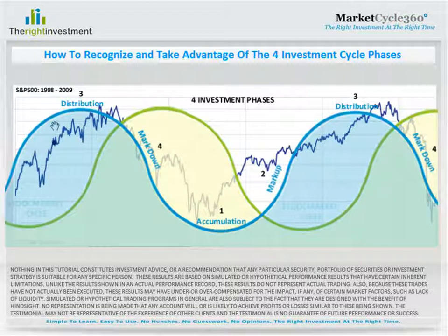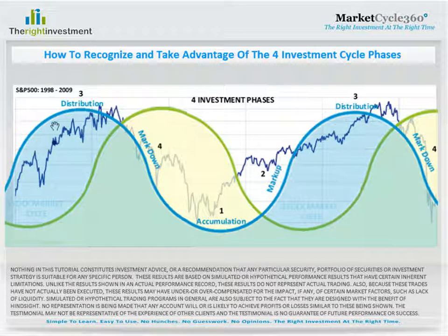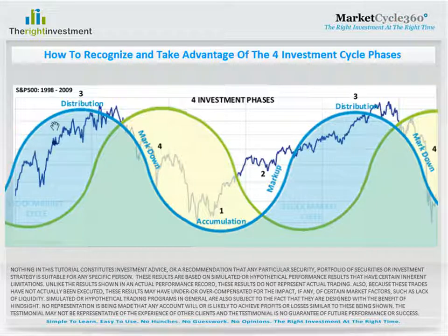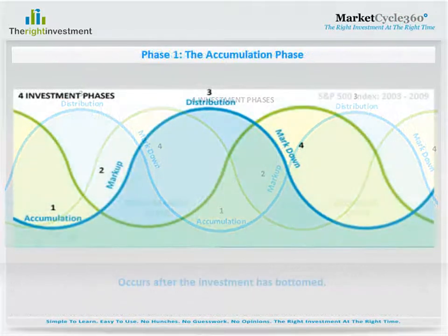All investments, markets, and economies go through the exact same four phases repeatedly. They go up, peak, go down, and then bottom. When one cycle is finished, the next begins. In this short tutorial, you are going to learn the four phases in an investment's economic cycle, how to recognize each phase, how to take advantage of the cycle, and ultimately why MarketCycle 360 works. Let's begin.